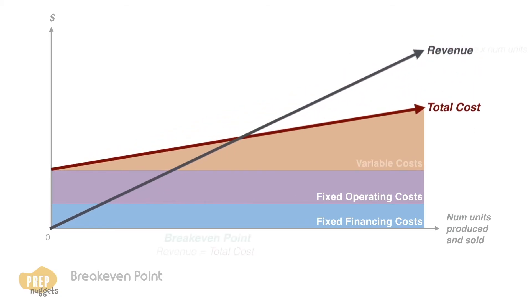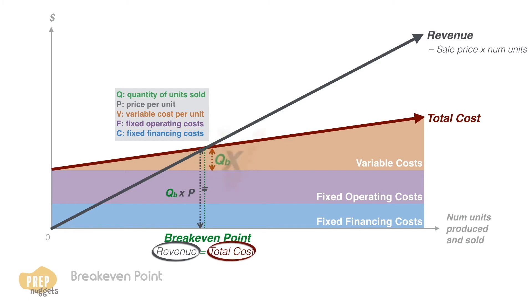Calculating this break-even point is simple. Revenue is the quantity of sales multiplied by the price per unit. Total cost is the quantity of sales times the variable cost per unit plus fixed operating costs plus the fixed financing costs. Solve for the quantity where revenue equals the total cost and we get this equation.